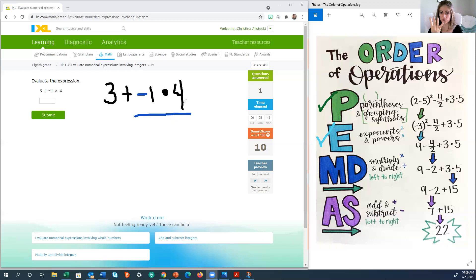So that helps you multiply the numbers first, then figure out the sign. So 1 times 4 is 4. But since it's a negative 1, our answer will be negative 4. And then we're going to bring down everything that we didn't work with. So the 3 and the plus. Alright, next, our final step is we are going to add or subtract left to right.